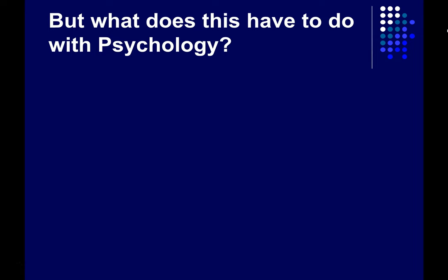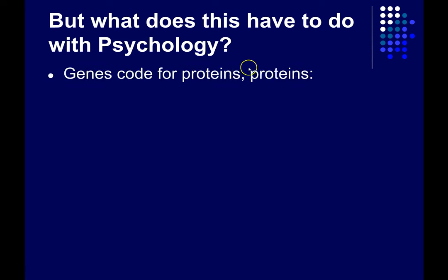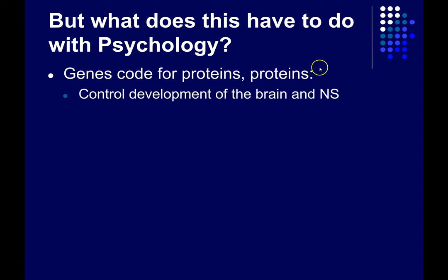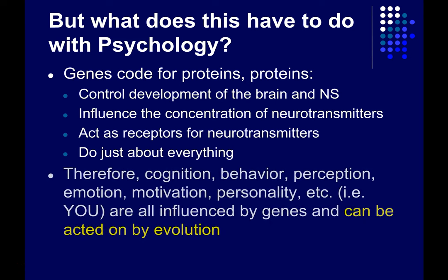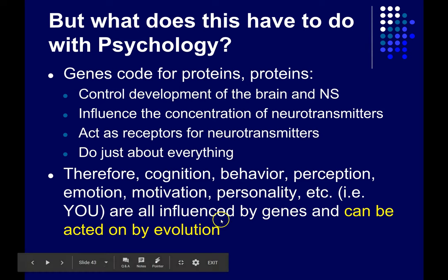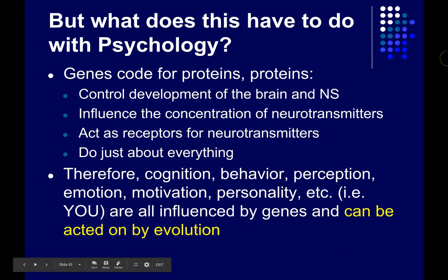But why are we talking about evolution in the context of a psychology class? Here's why: genes code for proteins, and proteins do everything in the body, including everything in the brain. They control the development of the brain and the nervous system. They influence the concentration and distribution of neurotransmitters, and also the receptors for those neurotransmitters. As a result of this, cognition, thought, behavior, perception, emotion, motivation — every aspect of your personality — all these things are influenced by genes, and therefore can be acted on by evolution. So evolution doesn't just act on physical features of the body; it can also act on psychological traits, behaviors, abilities, and tendencies.